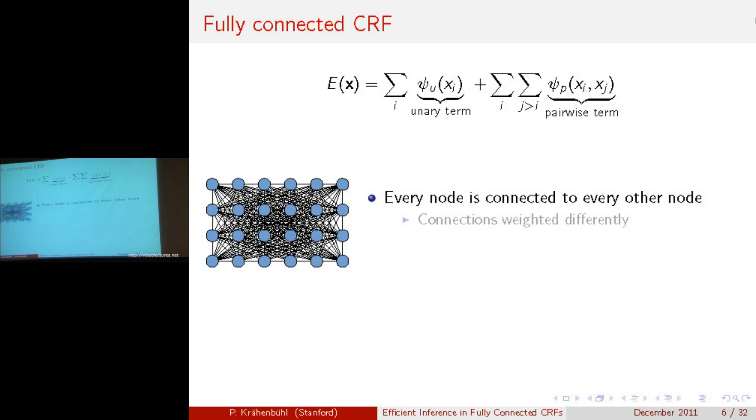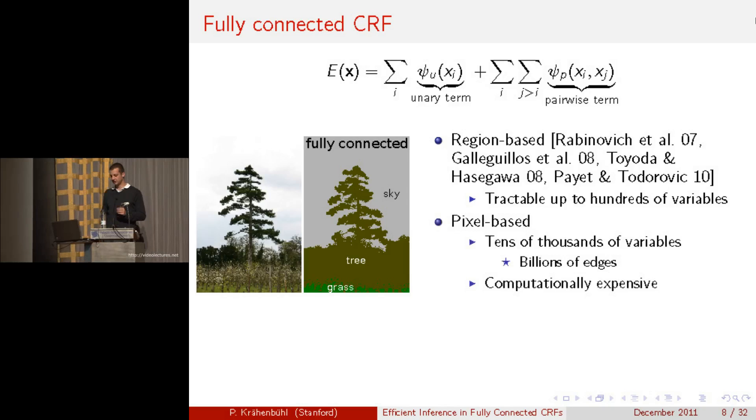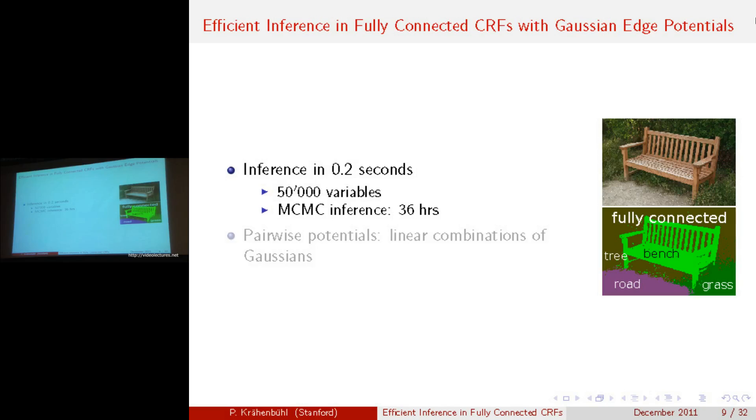We're not the first ones to explore fully connected CRF models. There's been a large body of work in computer vision on how to use fully connected CRF models on region-based CRFs. However, they're only tractable up to a few hundred variables, and what we are dealing here with is tens of thousands of variables and billions of edges between those variables, which is computationally much more expensive. What I'm going to show you in this talk is how to do efficient inference of those fully connected models. With efficient inference, I mean inference in a fraction of a second in a model of the size of the image here on the side, which contains 50,000 variables. Just as a reference, traditional inference methods such as MCMC inference take over a day to do inference in such a model, and graph cuts doesn't even converge within three days.